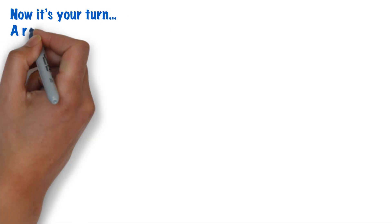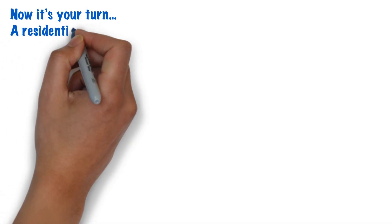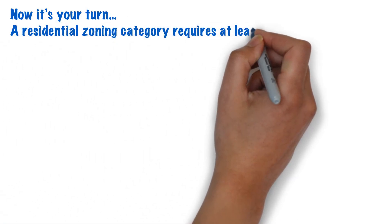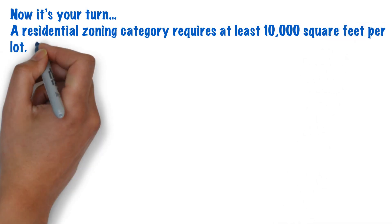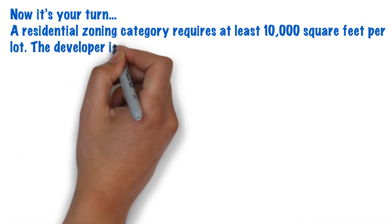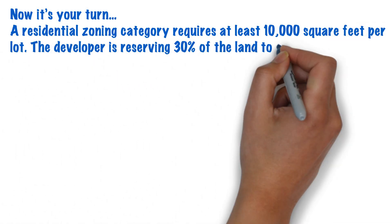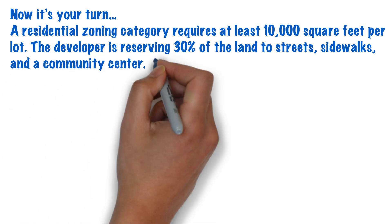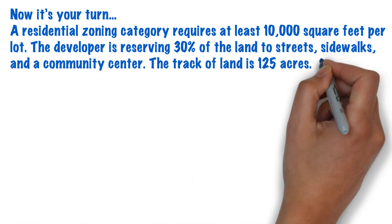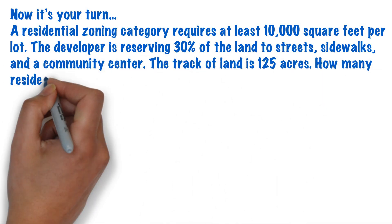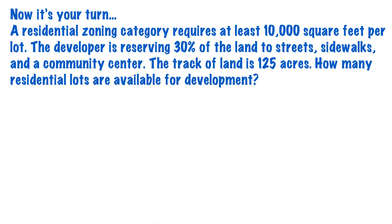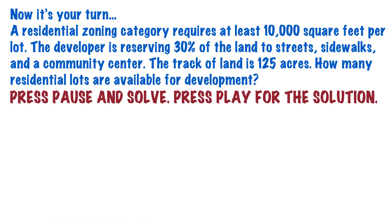Now it's your turn to practice. Here's your question: a residential zoning category requires at least 10,000 square feet per lot. The developer is reserving 30 percent of the land for streets, sidewalks, and a community center. The tract of land is 125 acres. How many residential lots are available for development? Hit pause now and solve the question — when you have your answer, hit play and we'll solve it together.